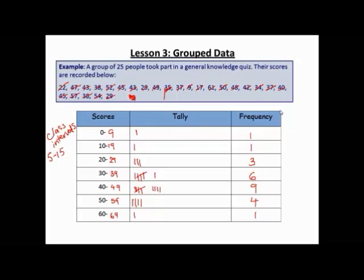So here's my completed frequency table. I've got one score between 0 and 9, one score between 10 and 19, three between 20 and 29, six between 30 and 39, and so on. And this should add up to 25, so let's just check. 1 plus 1 is 2, plus 3 is 5, plus 6 is 11, plus 9 is 20, plus 4 is 24, plus 1 is 25. So my total there is 25.